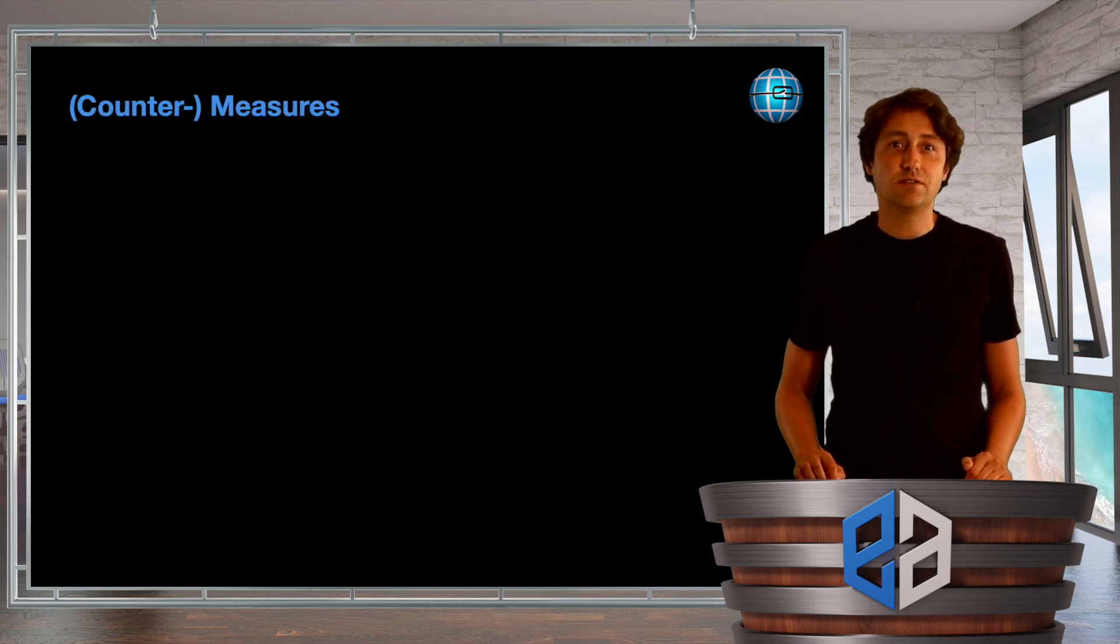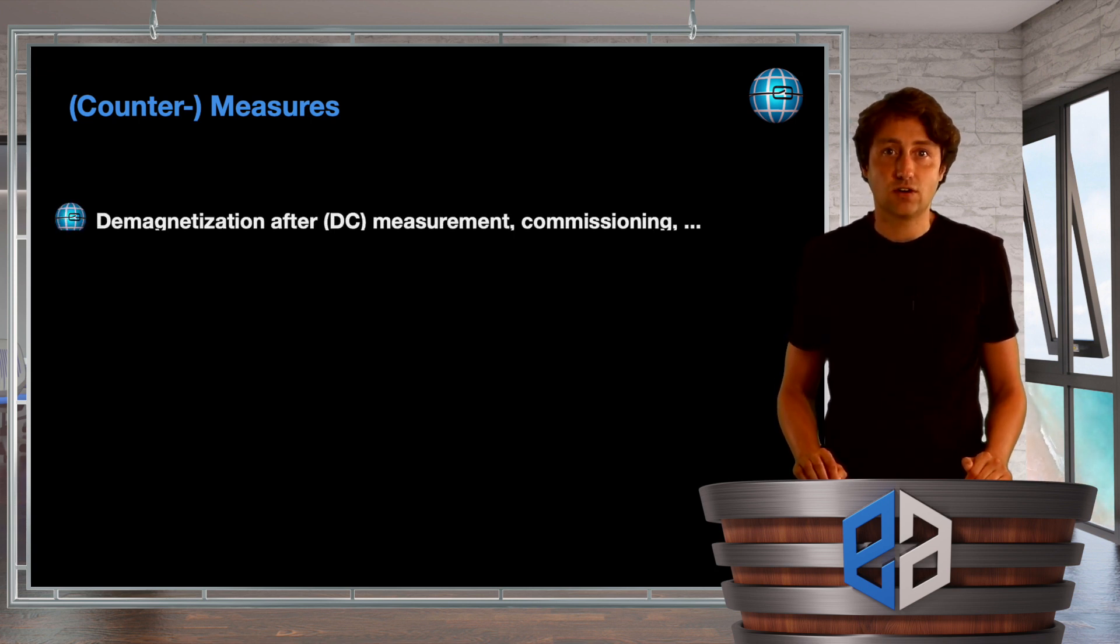Now what are the countermeasures that we can take? Firstly it is highly recommended to demagnetize the core after each DC measurement, which modern current transformer measurement devices can perform. It's a special function.